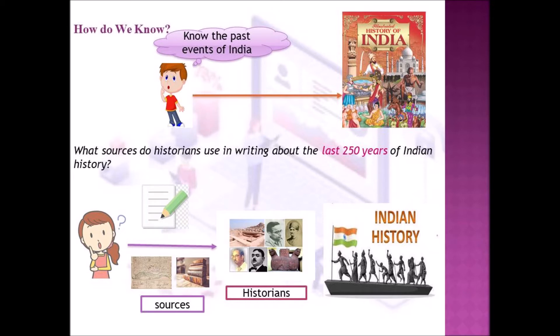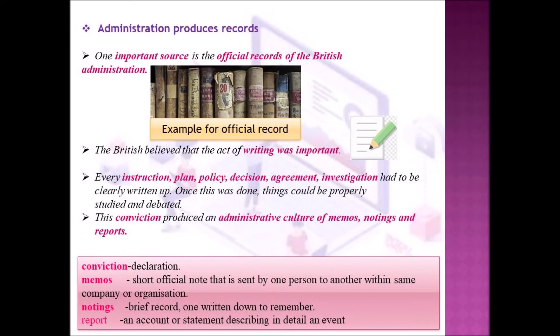Another question arose about the sources that were used by historians to write about Indian history. The first important source used by historians is the official records of the British administration.